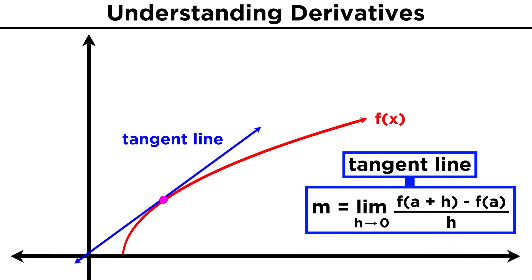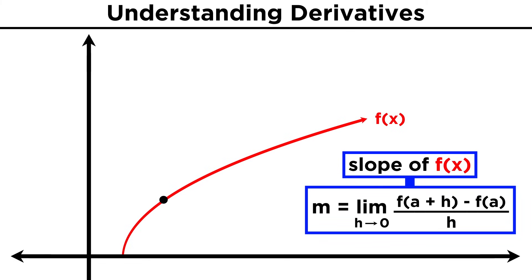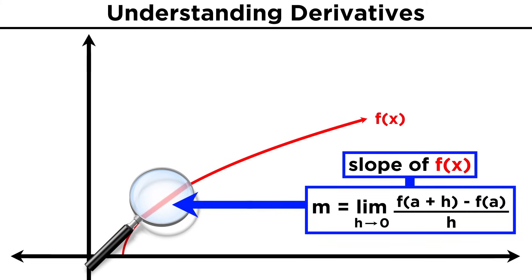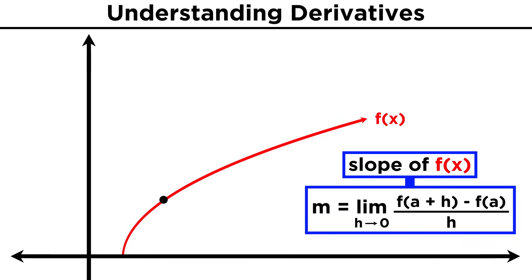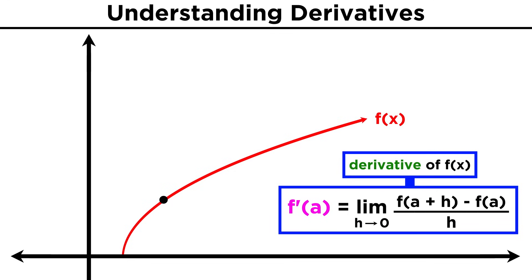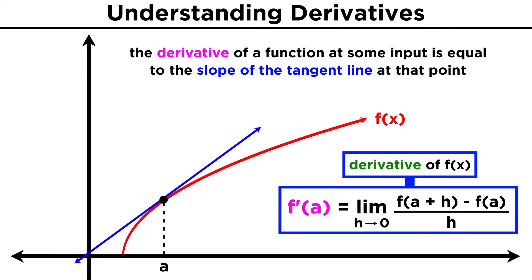What we must understand is that we can refer to this value as the slope not just of the tangent line, but the slope of the curve itself at this precise point. If we were to zoom into the curve at this point, closer and closer, it would eventually resemble a line with this slope. The derivative of some function f at some input value a, which we can represent as f prime of a, is precisely this expression. The derivative of a function at some input is equal to the slope of the tangent line at that point — identically, it is equal to the rate of change of the function at that point. These are two ways of saying precisely the same thing, and that thing is the derivative of the function.